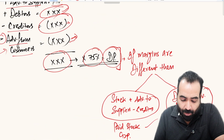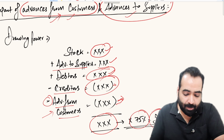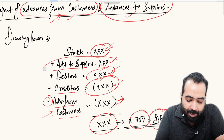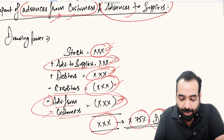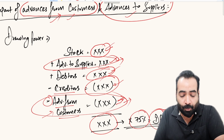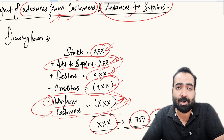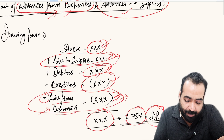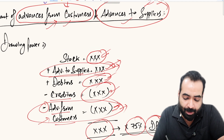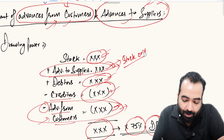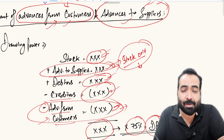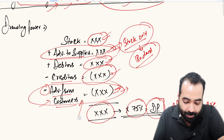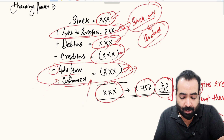A common question is: what is the aging norm for advances to supplier or advances from customers? Stock is allowed up to 180 days, debtors up to 90 days — so how many days old can advances to supplier or advances from customers be? Since advances to suppliers are essentially stock, generally they should be in line with the stock period and not older than 180 days.